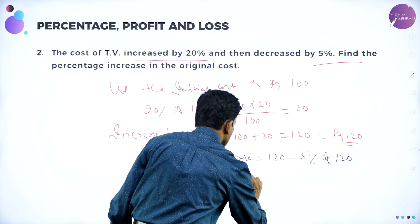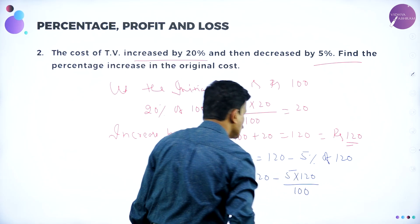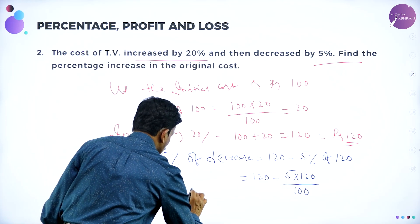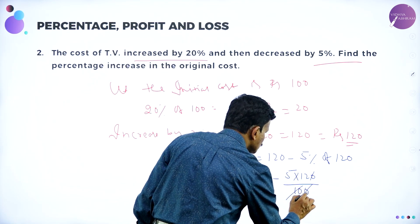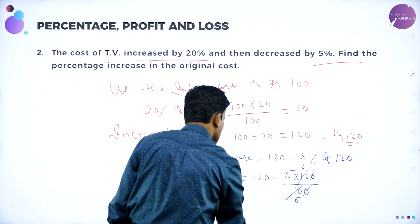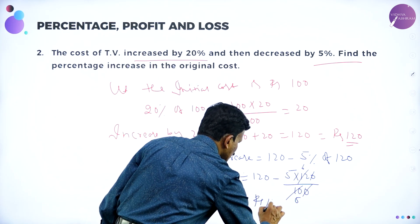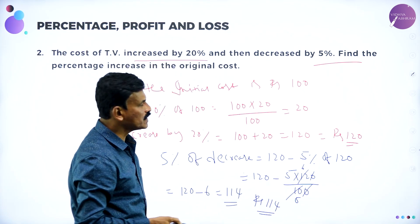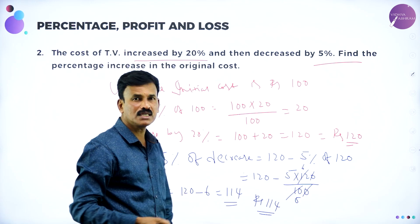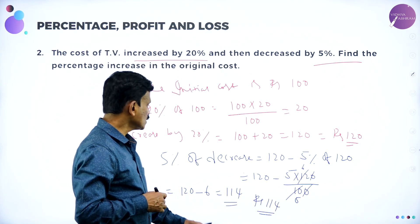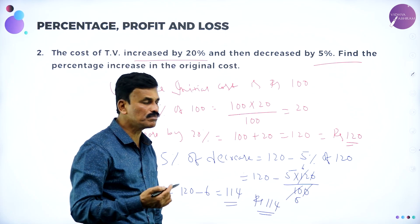5 percent of 120 is 5 into 120 divided by 100. Simplifying: 120 minus 6 equals 114 rupees. So the increase was to 120, then 5 percent is decreased from 120. 5 percent of 120 is 6, so 120 minus 6 equals 114. The new cost after both changes is 114.